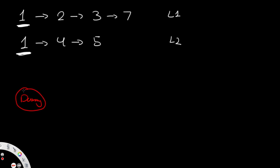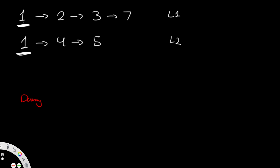A dummy node, as the name suggests, acts as a dummy — it has no purpose other than to stay as a placeholder. Its purpose will be evident soon. The dummy node has a value of none and just exists as a placeholder. We're going to add the rest of the merged list to it, so it holds as a placeholder for our answer. We'll make a comparison between L1 and L2 to decide what comes next.